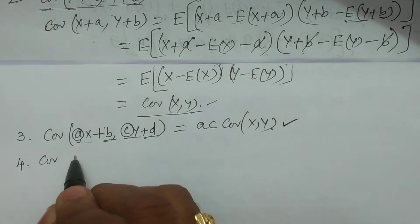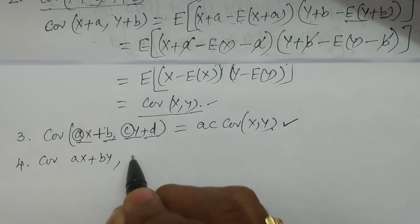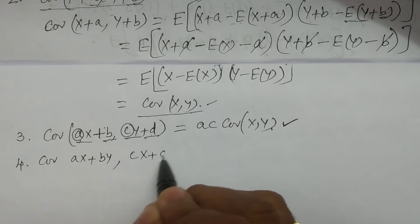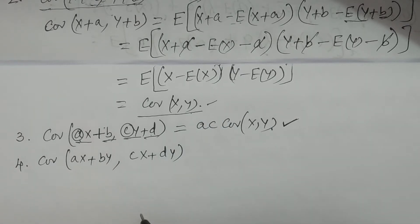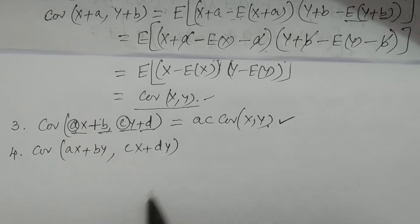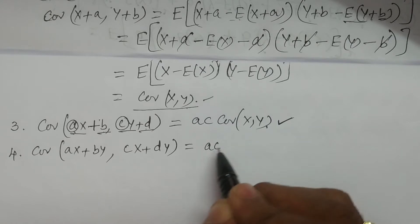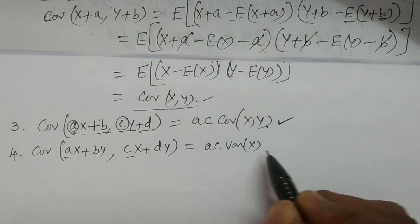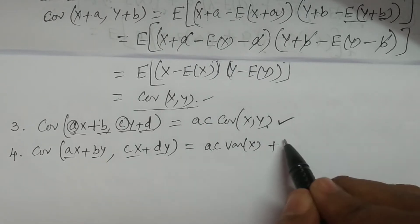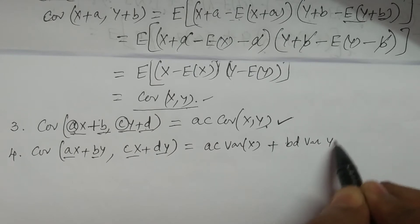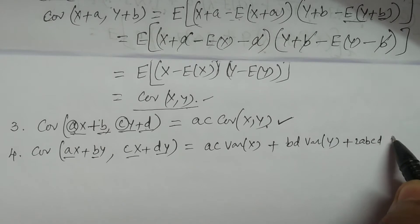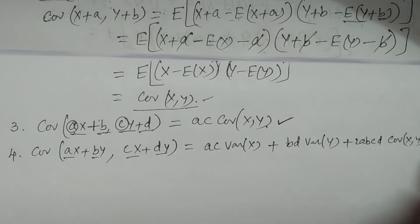Now, covariance of (ax plus by) and (cx plus dy). This property gives: ac times variance of x, plus bd times variance of y, plus (ad plus bc) times covariance of x, y.